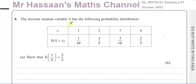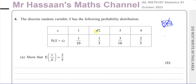This question is about discrete random variables. It says the discrete random variable X has the following probability distribution. A discrete random variable is basically the result of an experiment — for example throwing a coin — and the random variables are the possible results of that experiment. Imagine this is like a four-sided spinner which is being spun around.